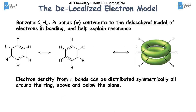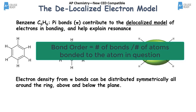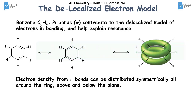For a triple bond like in ethyne, you have the sigma bond between the two carbons, one pi bond above and below (two lobes), and a second pi bond in front and behind (two more lobes). Remember: in Lewis structures, the electrons don't actually belong to a specific atom — in the delocalized electron model electrons are constantly moving. That double bond doesn't stay fixed; it can be in another place, which is where resonance comes from.